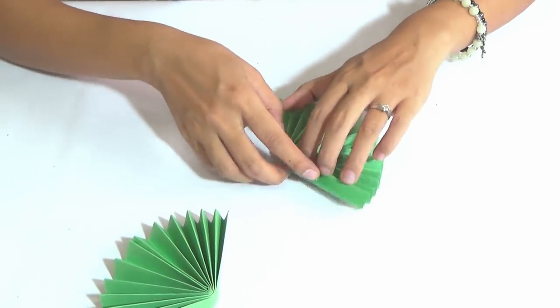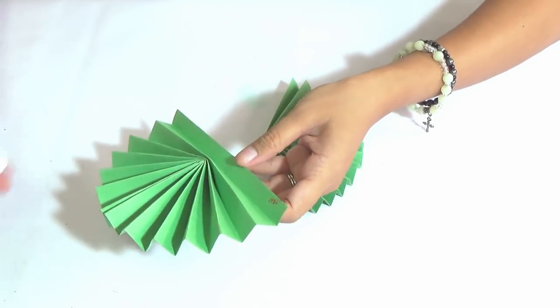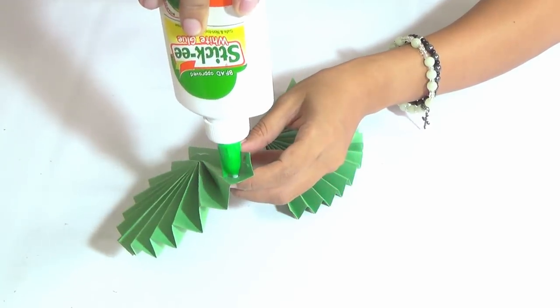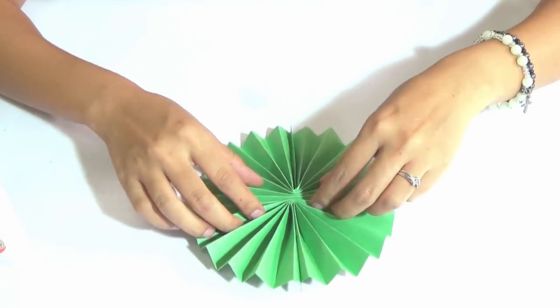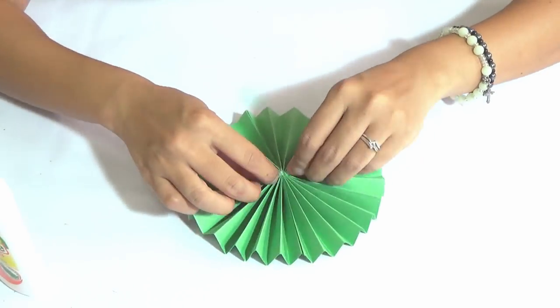Do the same for the other piece and glue the two together. That's the leaf done.